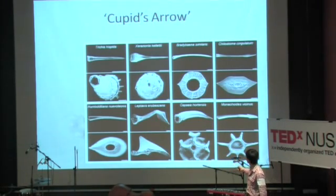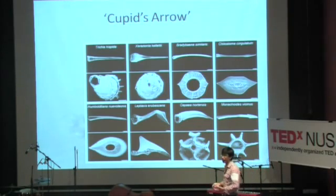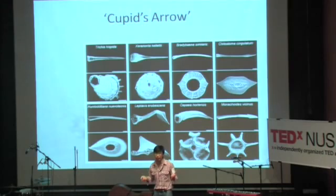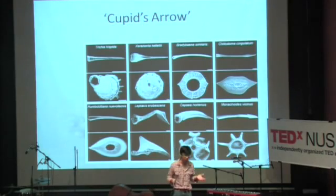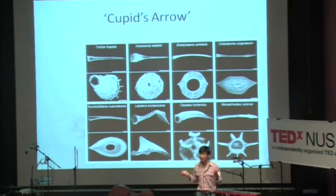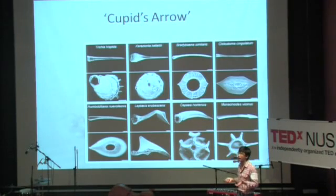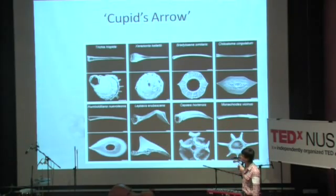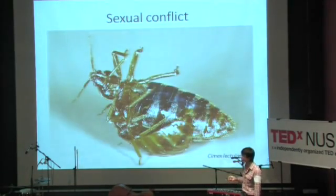These are the different kinds of love darts — some of them are really quite nasty looking. Cupid actually comes from the Greeks, who were well-known naturalists, and historians actually wonder if the idea of Cupid's love dart actually came from the love darts of snails.